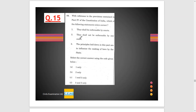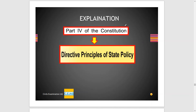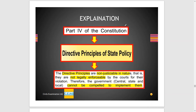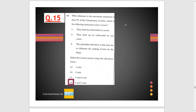Question 15: With reference to the provisions contained in Part 4 of the Constitution of India, which of the following statements is correct? Part 4 consists of the Directive Principles of State Policy. The Directive Principles are not legally enforceable and courts cannot compel their implementation. Option D is the correct option because they are not enforceable by any court, but the principles laid down in this part influence the making of laws by the state, talking about the welfare state, and options 2 and 3 are correct.